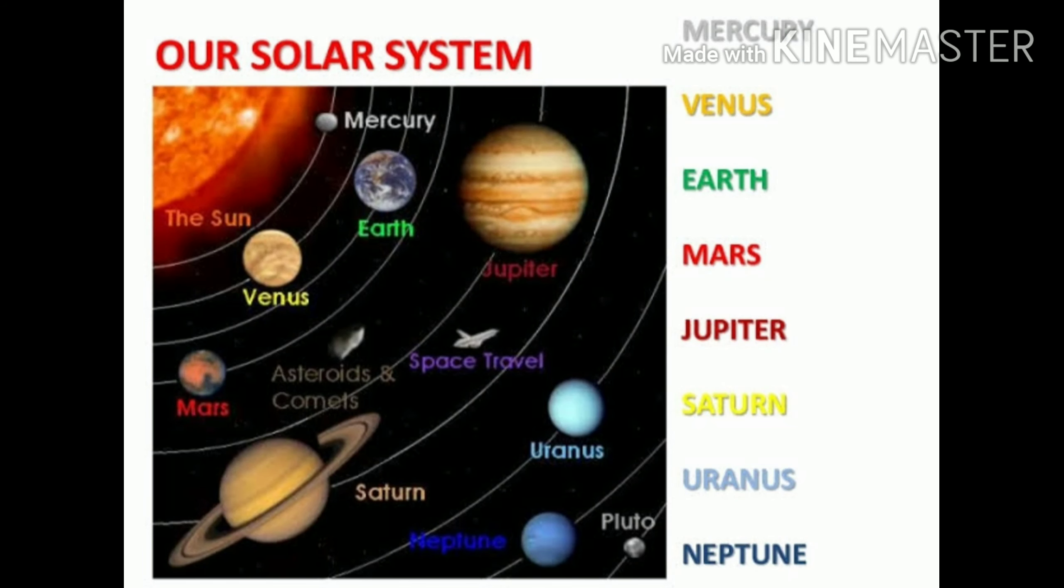Let's learn about the planets in our solar system. There are 8 planets in our solar system. They are Mercury, Venus, Earth, Mars, Jupiter, Saturn, Uranus and Neptune.